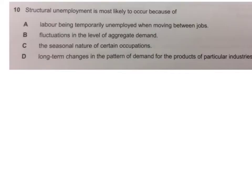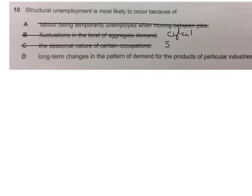This one's easy, so I'll do it very quickly. Structural unemployment is when there's a mismatch between the skills needed in the economy and the skills that labourers have got. Labour being temporarily unemployed when moving between jobs — that's definitely wrong, because that is frictional unemployment. Fluctuations in the level of aggregate demand — anything where AD is too low would be cyclical unemployment. The seasonal nature of certain occupations — that is seasonal unemployment. And finally, long-term changes in the pattern of demand for products in particular industries — because it's a change in demand for an industry, there's no longer demand for that sort of skill, so workers won't have the right skills for another industry. That's why it's structural unemployment.